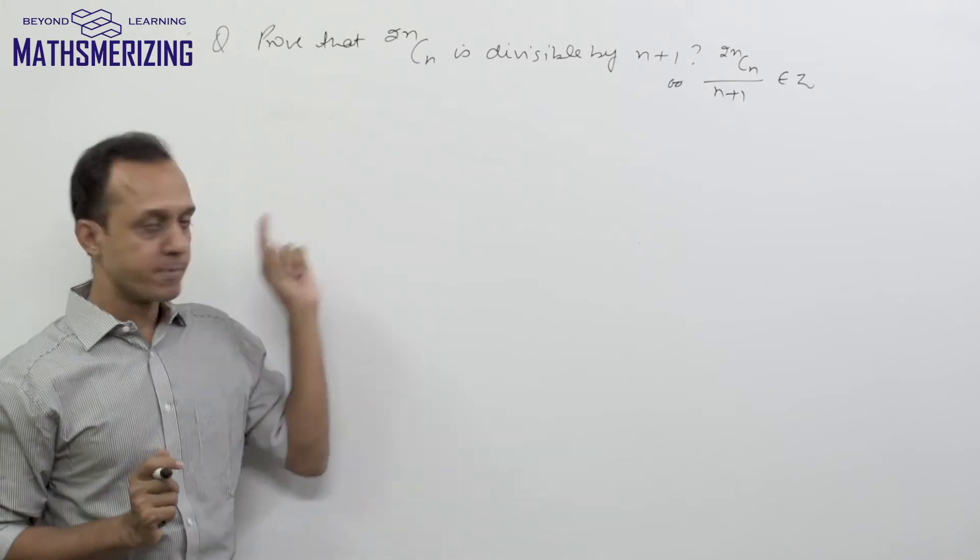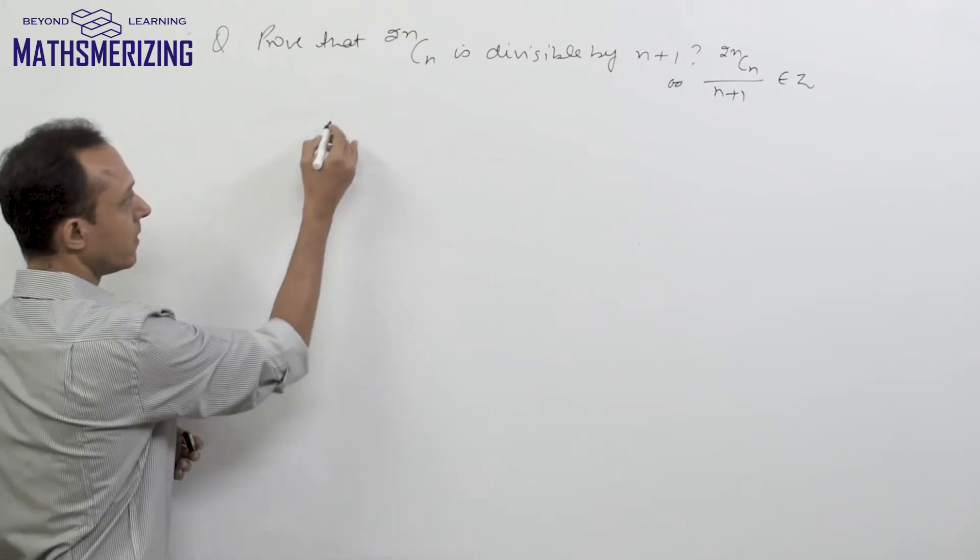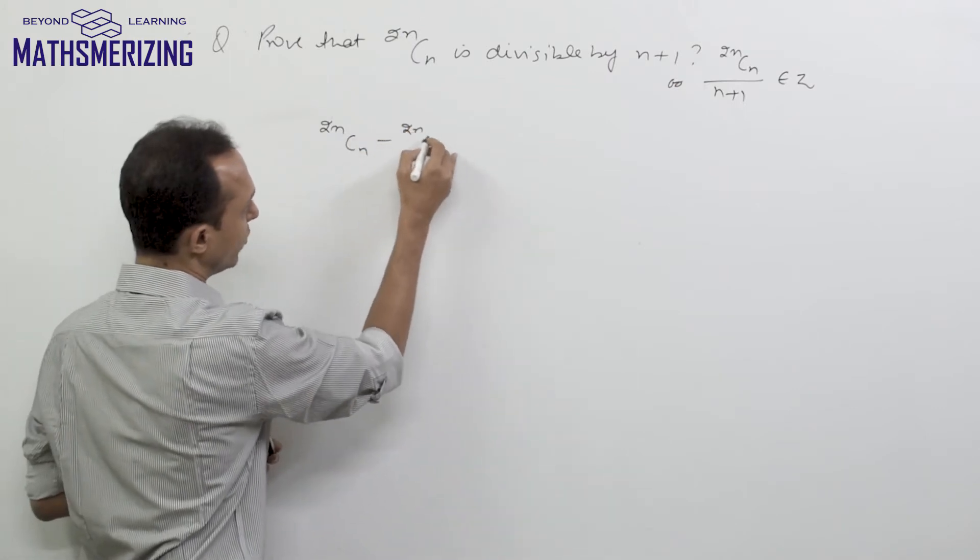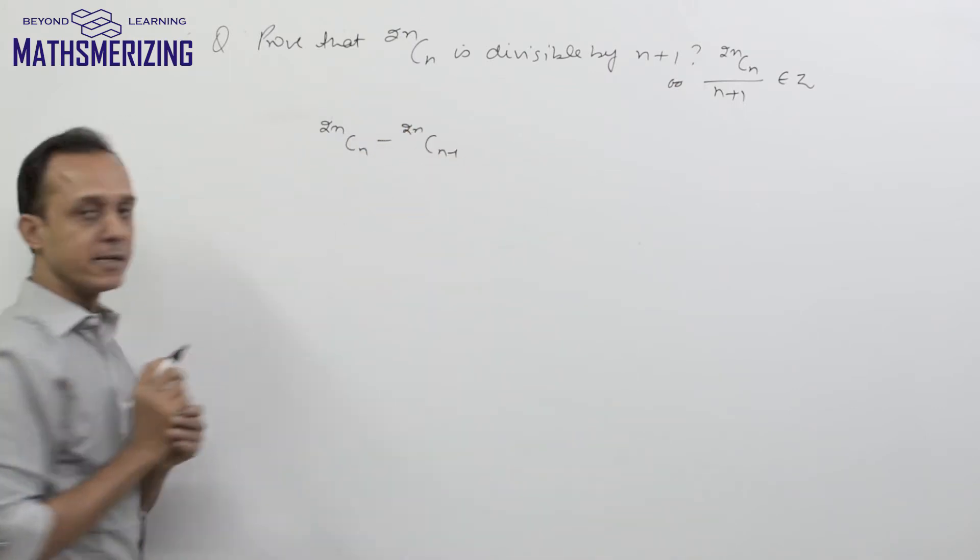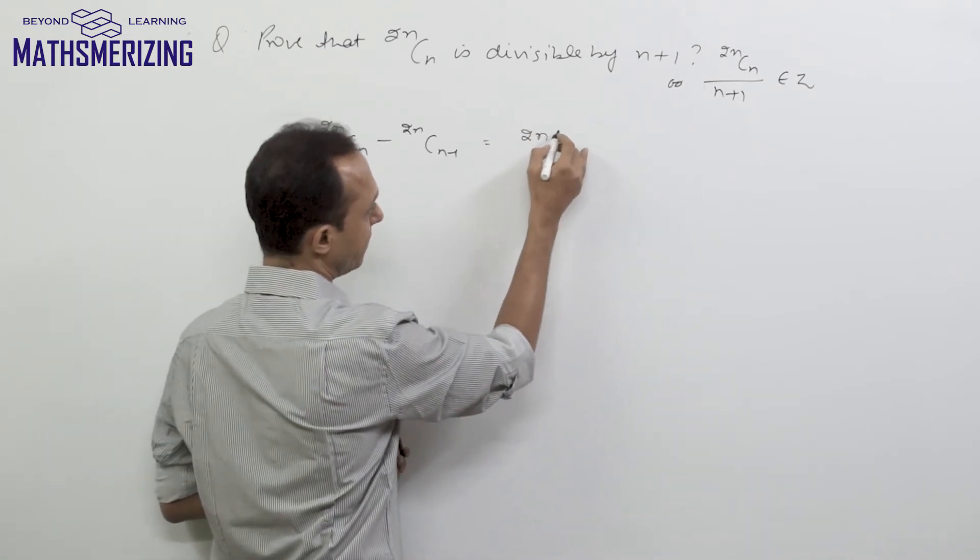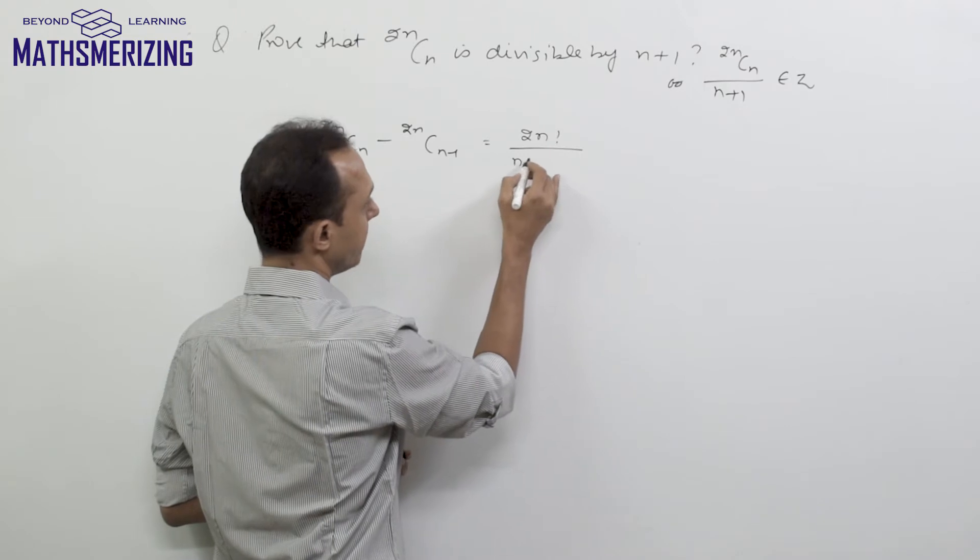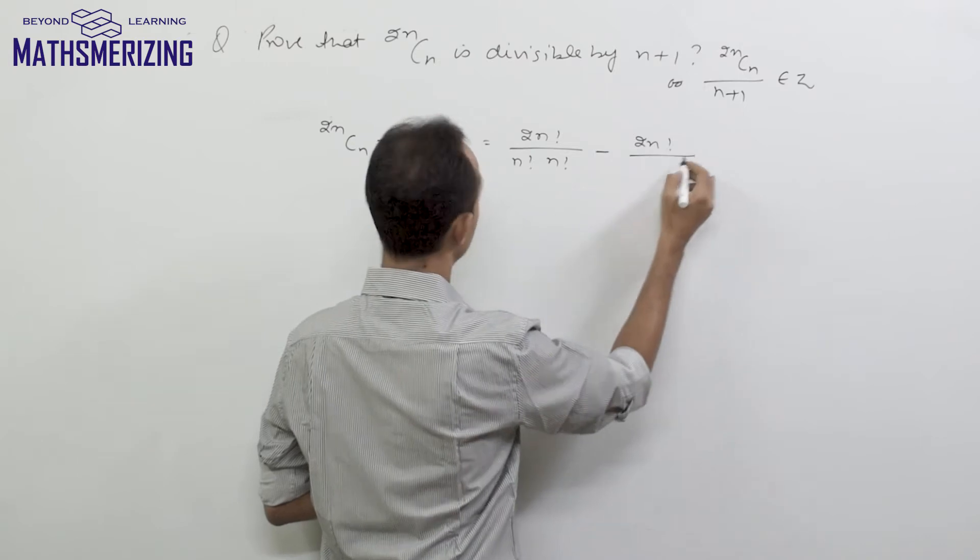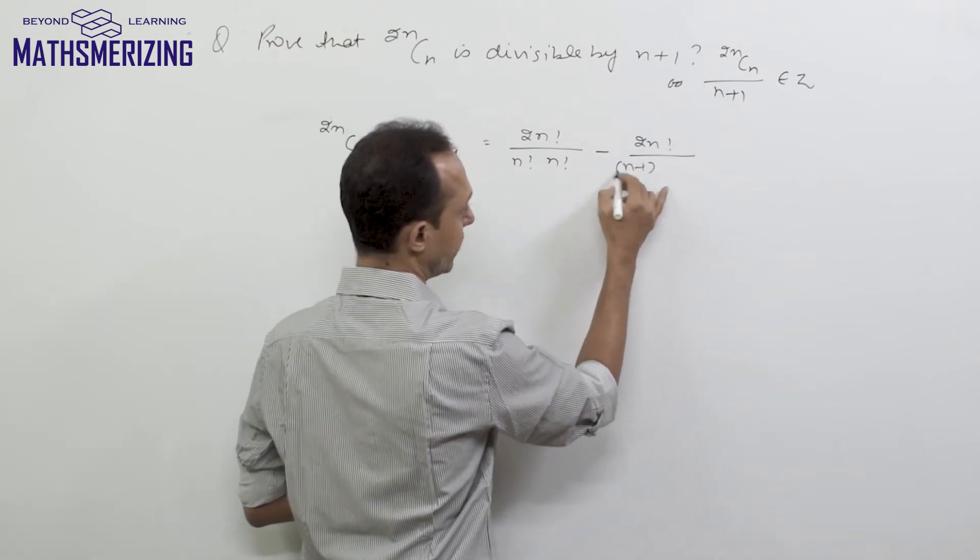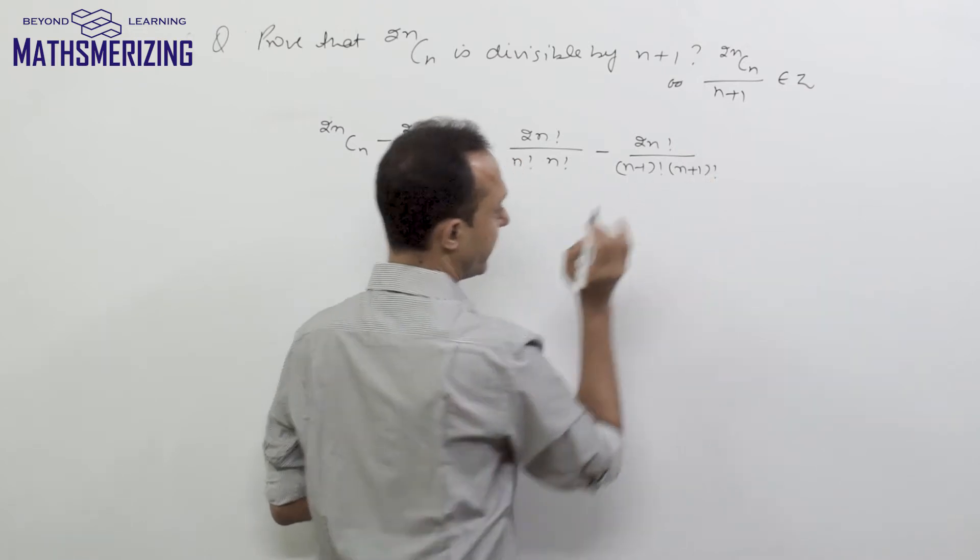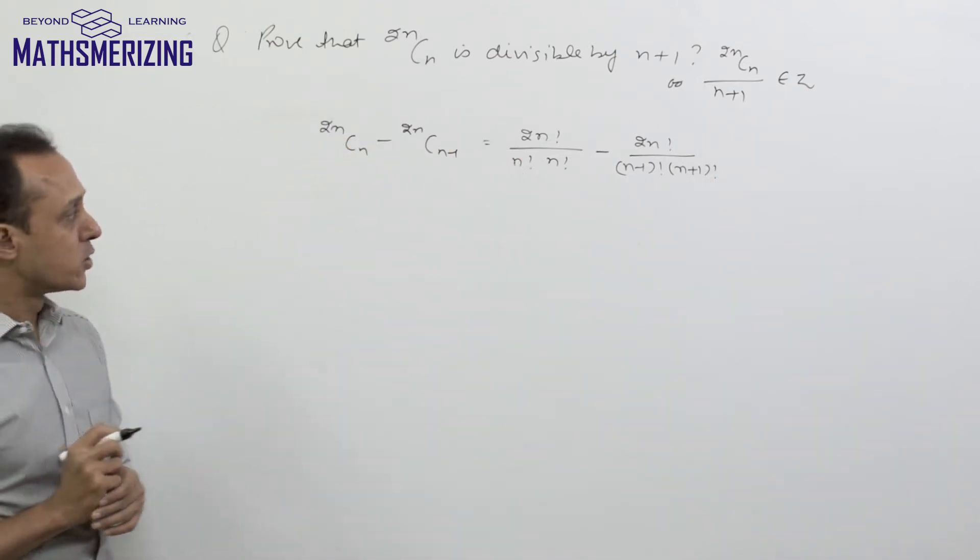let us consider an expression which is 2nCn - 2nCn-1. Now if I expand, I will write (2n)!/(n!·n!) - (2n)!/((n-1)!·(n+1)!).